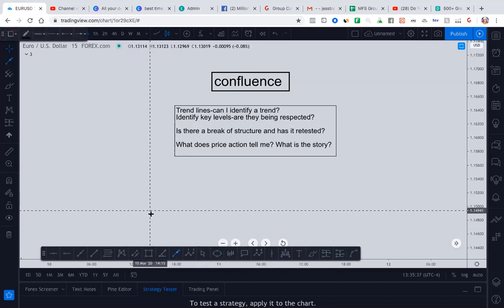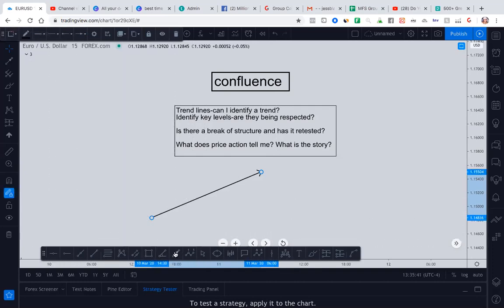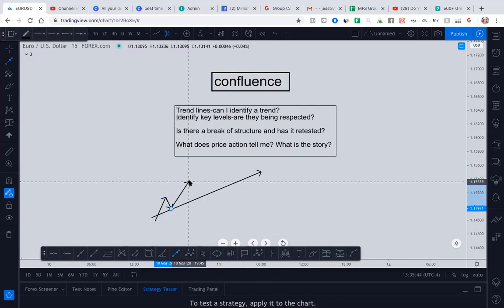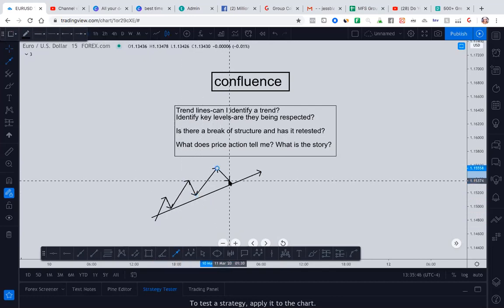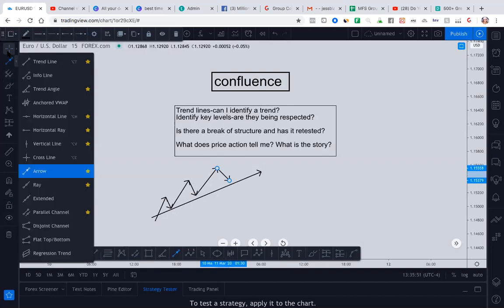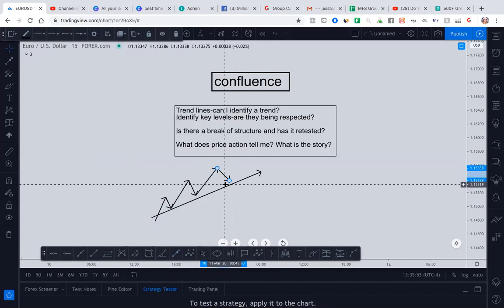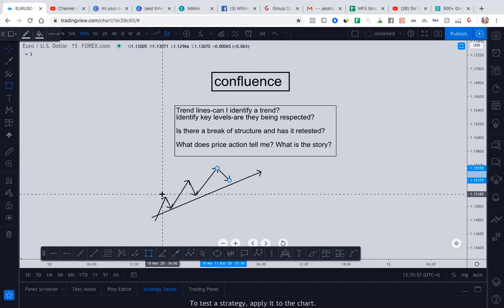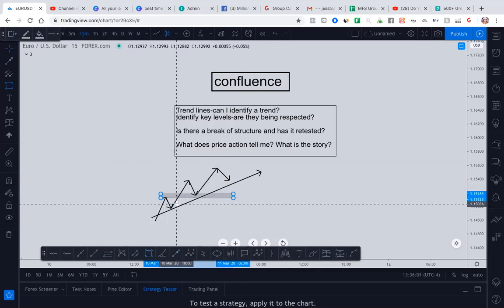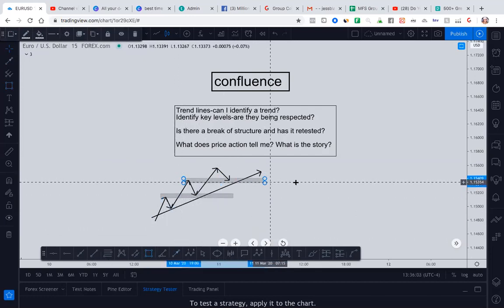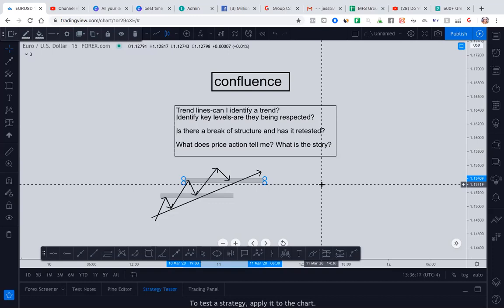So imagine this, imagine having a trend line and you have some market structure, right? And every time you, excuse me, every time it hits this, we're looking, right? We're looking for entries. But then if you add market structure to this, you now are making this a stronger probability trade. Not only do you have a retest of the trend line, you have a retest of market structure. So that is what we would call confluence. We have two things that are giving us confirmations to go ahead and get into this trade.